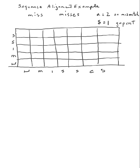I'm trying to align 'miss' against 'misses'. I put a zero in the top-left to initialize. Moving left to right along the top row, the cost of each cell is the cost of the previous cell plus the gap cost for advancing one position on 'misses' without advancing on 'miss' — essentially inserting a gap, which costs one.